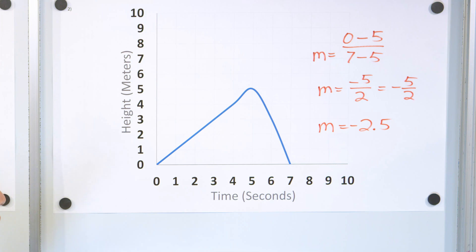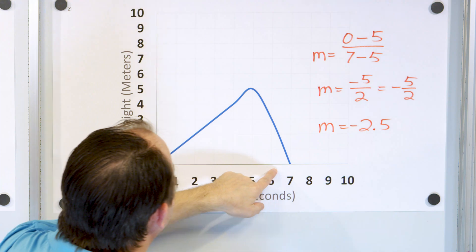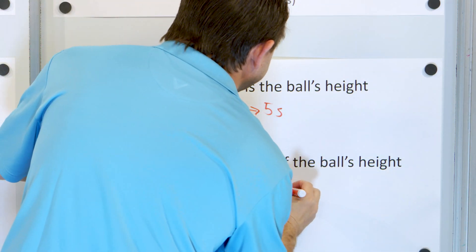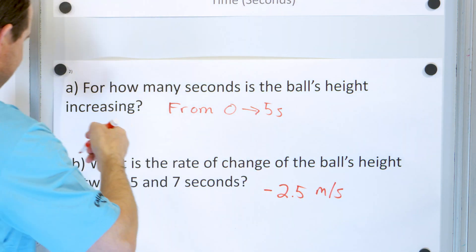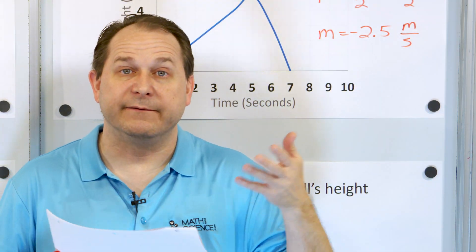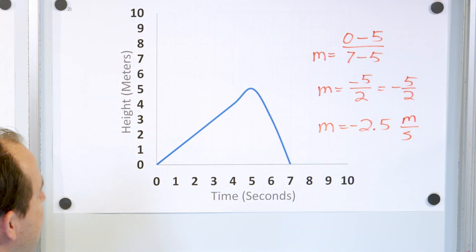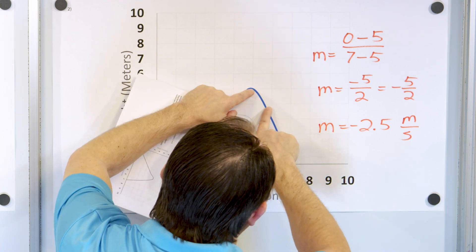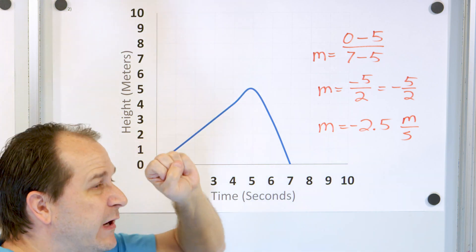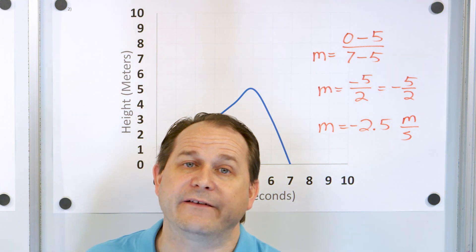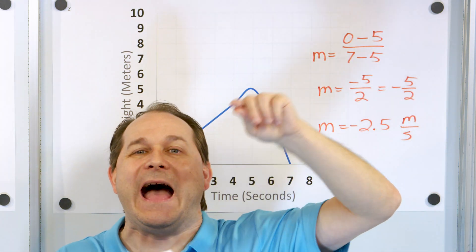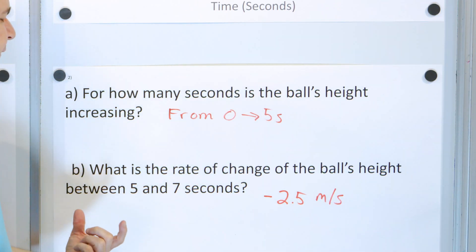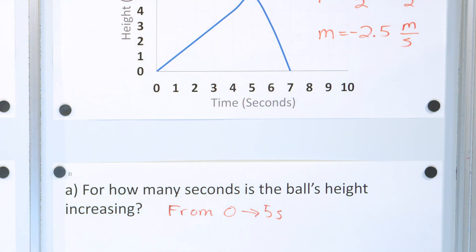That's negative 2.5. What are the units? The rise was in meters and the run was in seconds, so it's meters per second. So the rate of change of the ball's height between five and seven seconds is negative 2.5 meters per second. This makes a lot of physical sense — meters per second is a velocity or speed. The negative sign just means that the ball is going down and not up; it's going toward the ground at a rate of two and a half meters per second. Since the curve is slightly bent, this is more accurately the average rate of change, or the average velocity, of negative 2.5 meters per second.